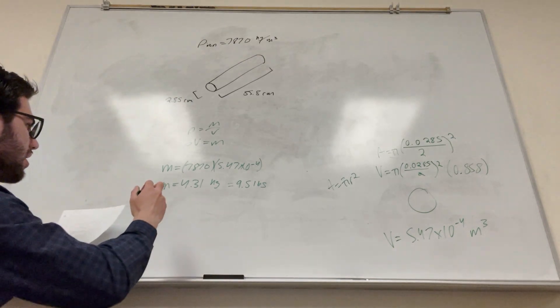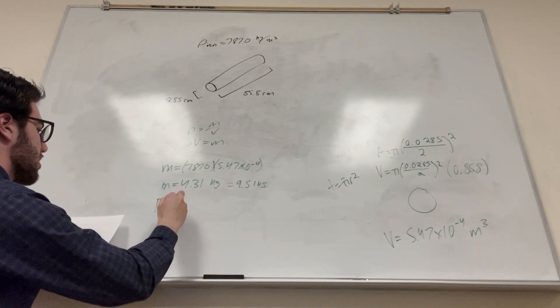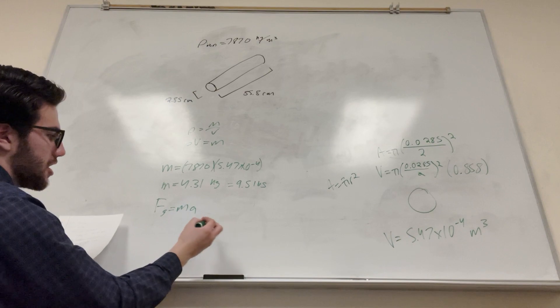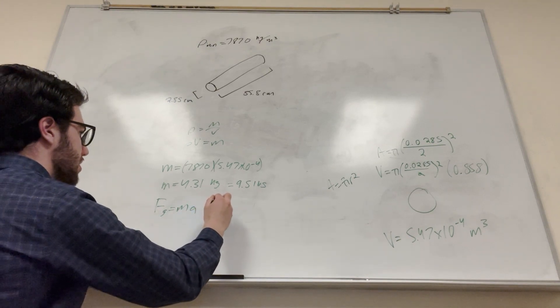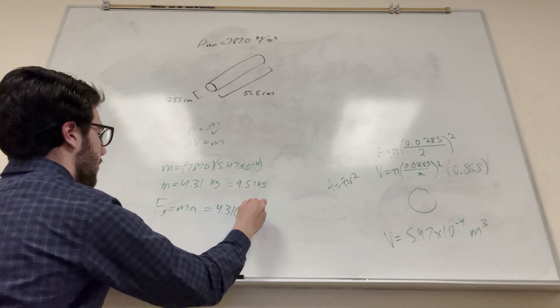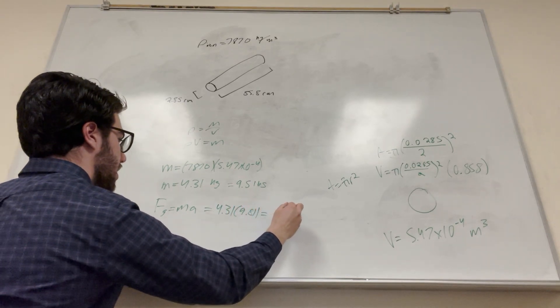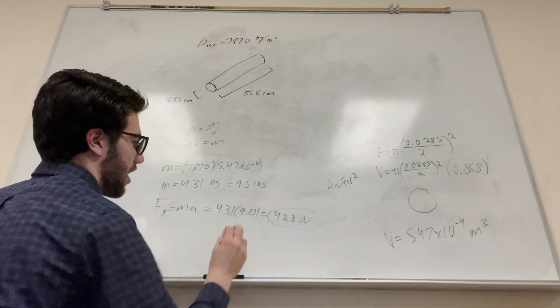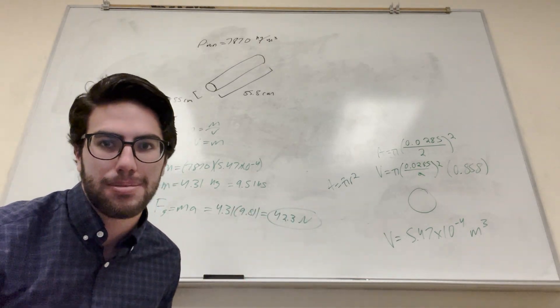I guess if you want it in newtons, you know that force of gravity is equal to mass times acceleration. Acceleration is gravity, so it's equal to the kilograms, 4.31 times 9.81. And if you do this math, you get 42.3 newtons, depending on what unit your book wants it in.